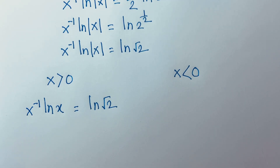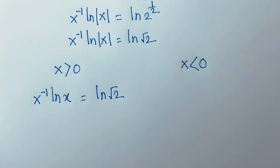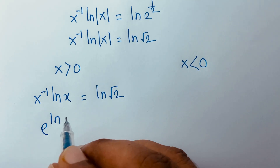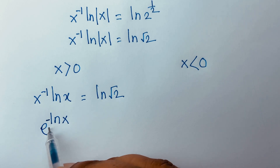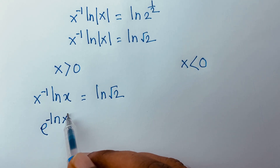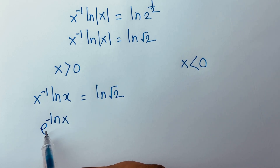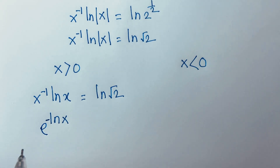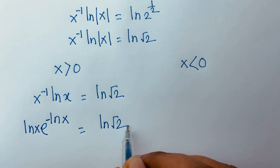Now, you know that e to the power ln(a) is equal to a. According to this rule, I can write x inverse as e to the power ln(x) with a minus, so x inverse equals e to the power minus ln(x). Substituting, minus ln(x) times e to the power minus ln(x) is equal to minus ln(√2).